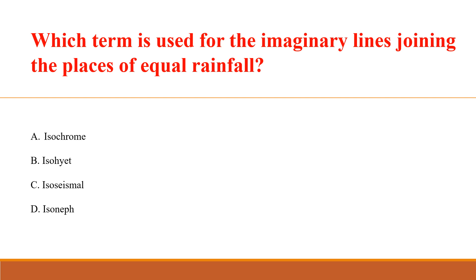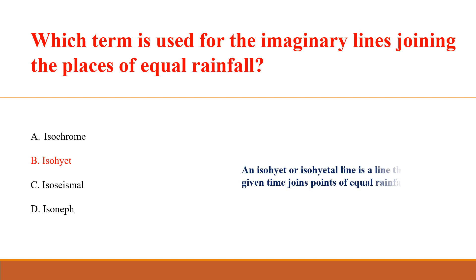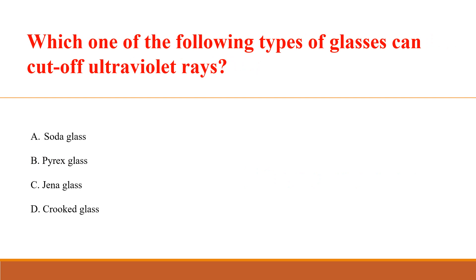Which term is used for the imaginary lines joining the places of equal rainfall? Answer B: Isohyet. An isohyet, or isohyetal line, is a line that joins points of equal rainfall on a map within a given time period.